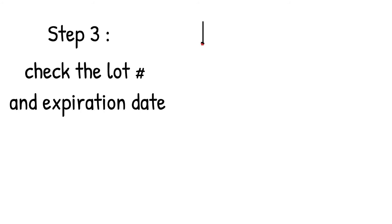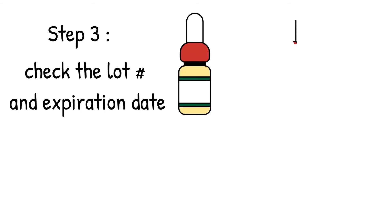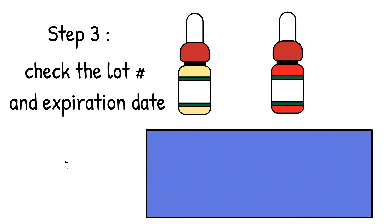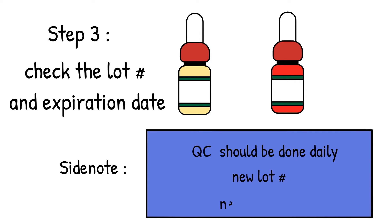Step 3: Check that you are using the correct lot number and that the reagents are not expired. The reagents are to be QC'd daily and with each new lot number and new shipment. Expired or defective reagents can give you false test results. For instance, expired reagents lose their strength and can give you false negatives when the reactivity is actually positive. These lead to wrong blood type determinations.